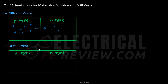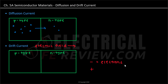For drift current, the motion of charges is under the influence of an electric field. So if we have an electric field that moves towards the right-hand side, it is important to note that we are dealing with both negative and positive charges, where negative charges are electrons and positive charges are holes.